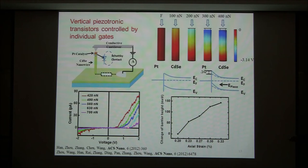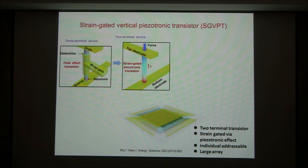If you fix the bias at one volt here, about one volt here — at one force level the device is on, at another it is off. This is a strain-gated switch.